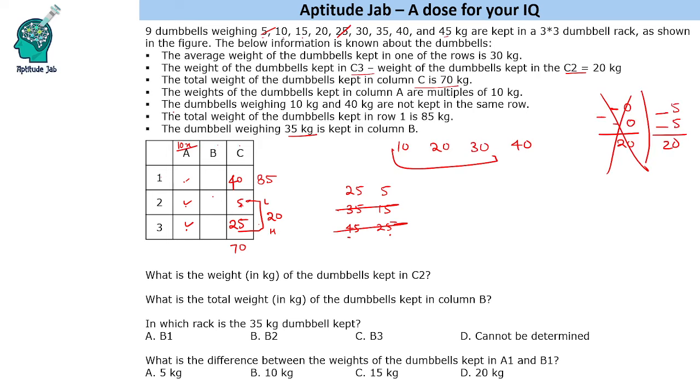Now we are given that the dumbbells weighing 10 kg and 40 kg are not kept in the same row. So we cannot have 10 here. So we can have 20 or 30.